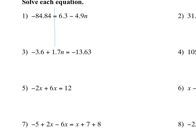Just like yesterday, here's my line. Find your variable. Today it happens to be over here — it's negative 4.9n. I need to move 6.3 to the other side. I call this blue line I drew through the equal sign the brick wall. If you're going to go across the brick wall, you've got to do the opposite. So what's the opposite of positive 6.3? That's negative 6.3. We're going to take that number on the other side — this negative 84.84 — and subtract 6.3 from it. That's negative 91.14, and that equals negative 4.9n. Now divide by our coefficient — divide by negative 4.9 — and I get N equals 18.6.